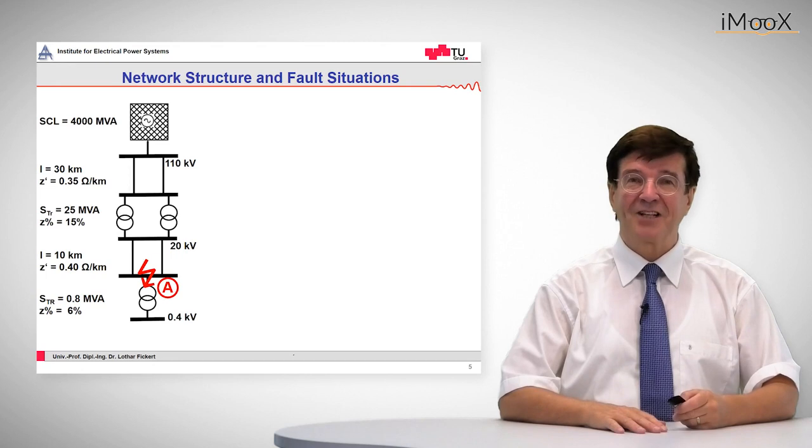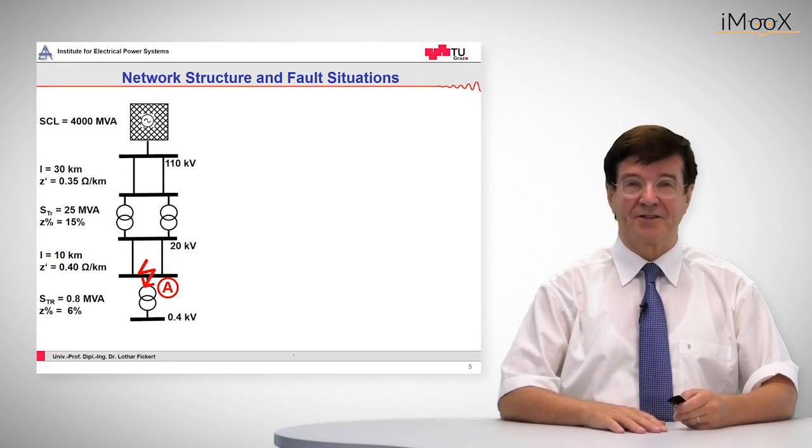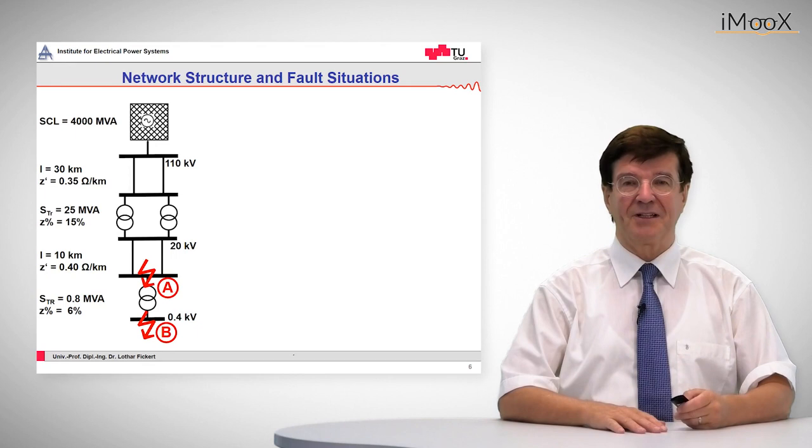We want to calculate two types of fault locations. One is on the 20 kV level and the other one is on the 400 volt level.